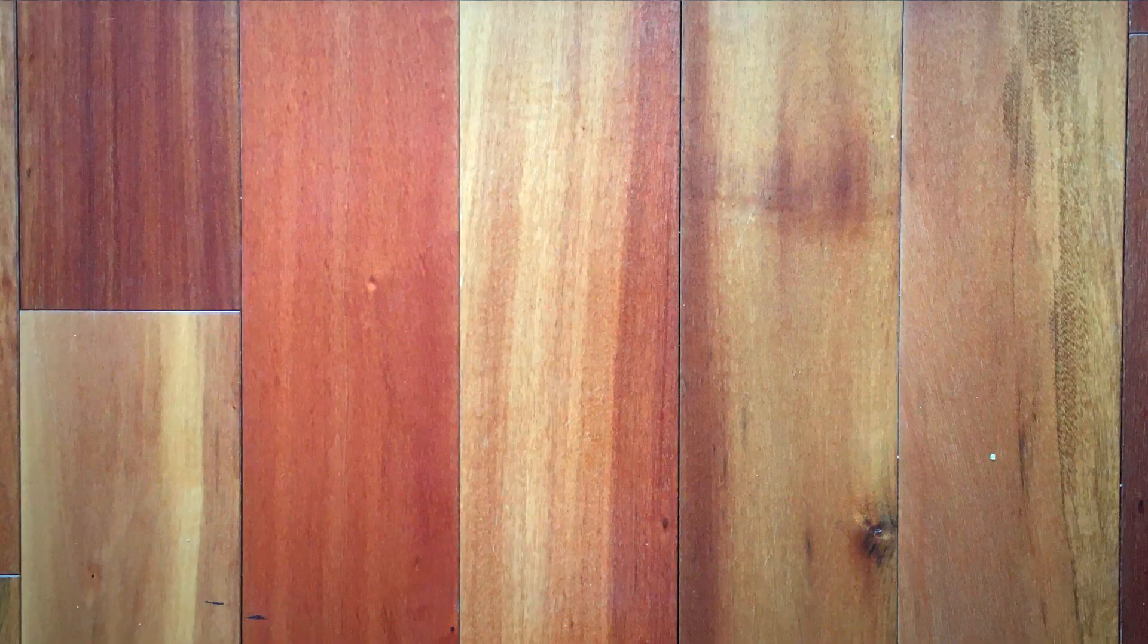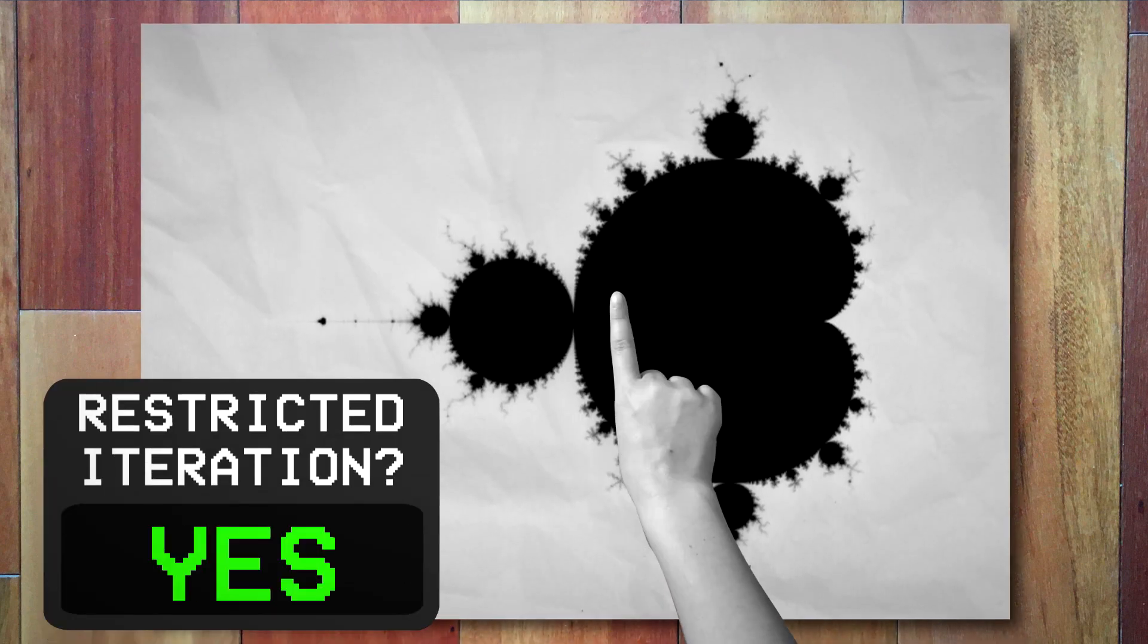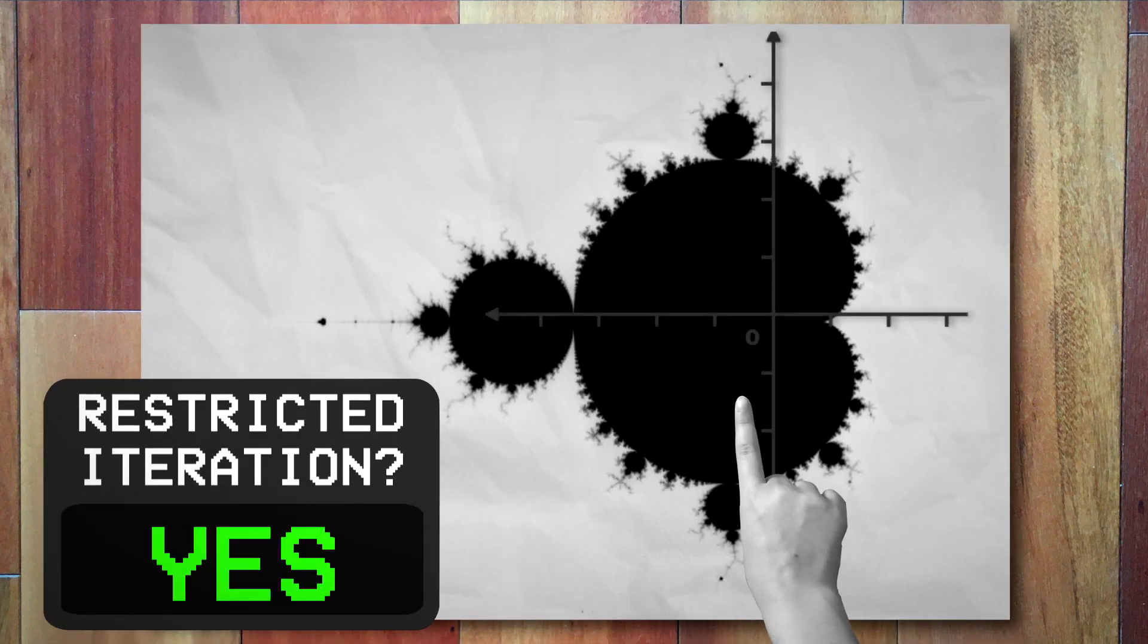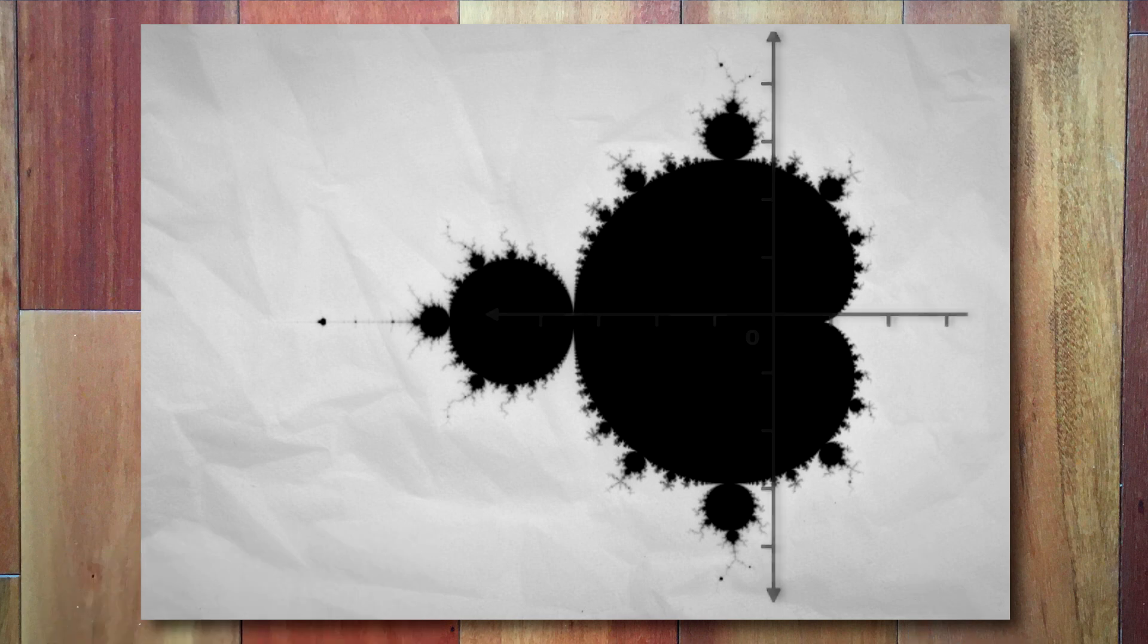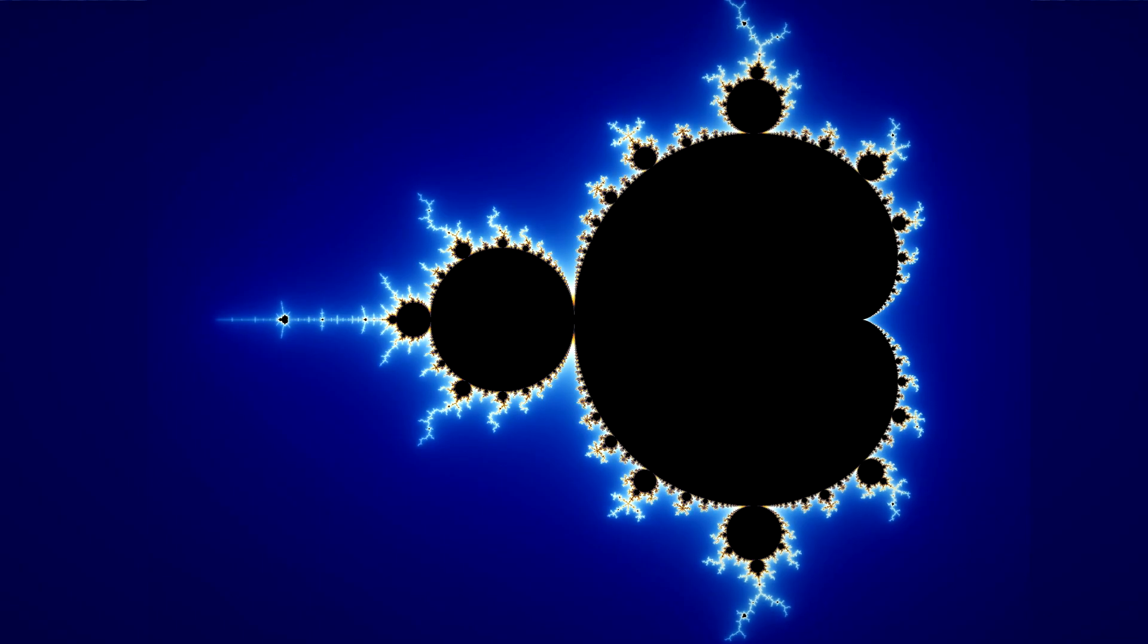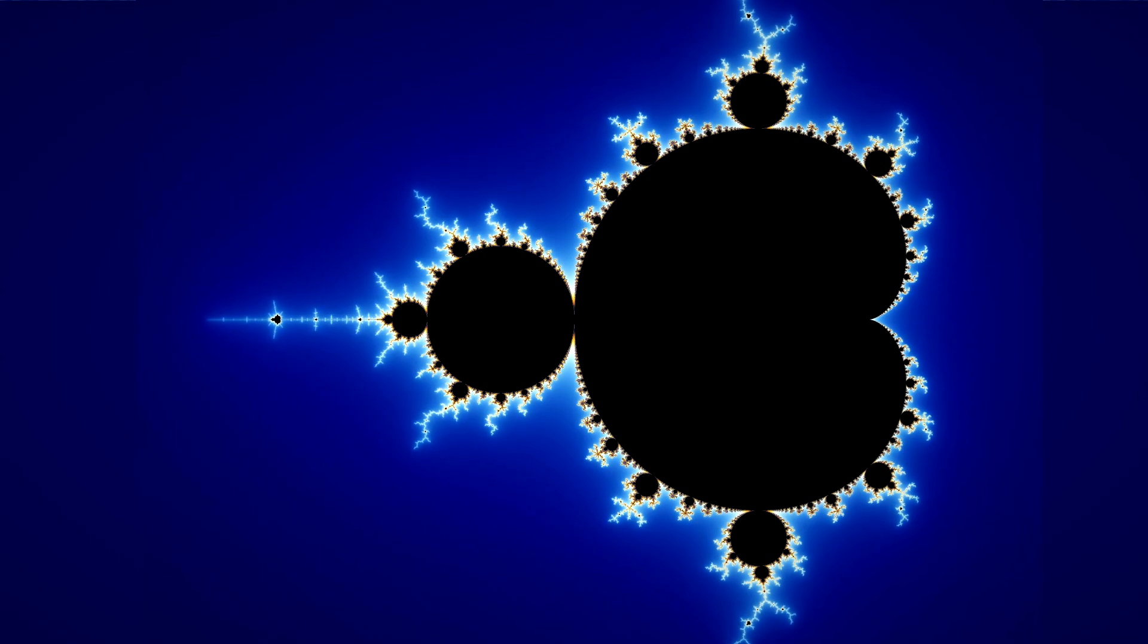So while it looks spectacular and complicated, the Mandelbrot set just shows where restricted iteration occurs on the complex plane, that by some mathematical miracle manifests as a partially self-similar, entirely mesmerizing image.